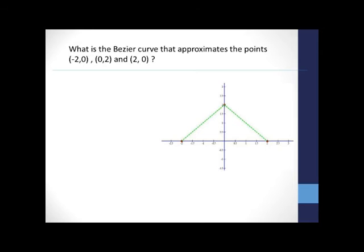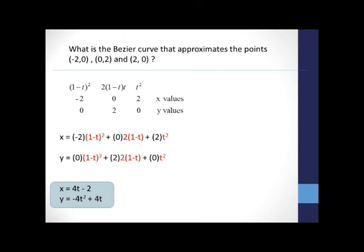So suppose we want to find the Bézier curve that approximates the points (-2, 0), (0, 2) and (2, 0). Since we have three points, we need to use the three blending functions: 1 minus t squared, 2t times 1 minus t, and t squared. For the x equation, we just blend the three x values, and for the y equation, we blend the three y values. This gives us x equals 4t minus 2, and y equals negative 4t squared plus 4t. The graph of this parametric equation is shown on the right.